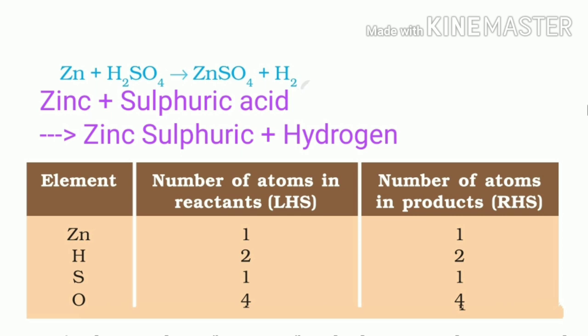If we examine the number of atoms of different elements on both sides of the arrow: Zinc — 1 on the left hand side and 1 on the right hand side. Hydrogen — 2 on the left hand side and 2 on the right hand side. Sulfur — 1 on the left hand side and 1 on the right hand side. Thus, the number of atoms of each element is the same on both sides. It is a balanced chemical equation.